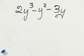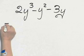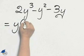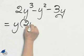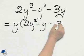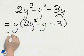Factoring again with a common factor to make life easier on us. The common factor is y, and factoring it out, I have 2y squared minus y minus 3. Don't lose the y.